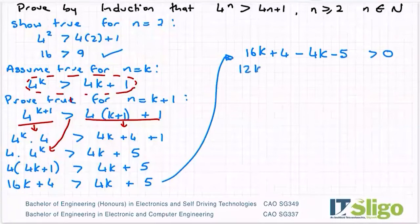So I'll end up with what's that, 12k minus 1 is that greater than 0. Well yes, it is for sure.